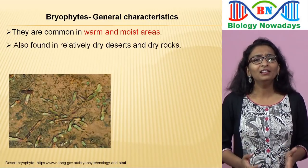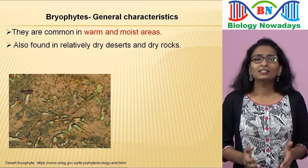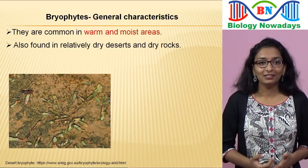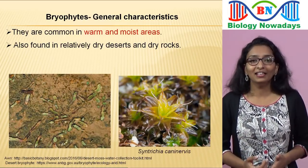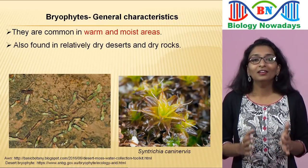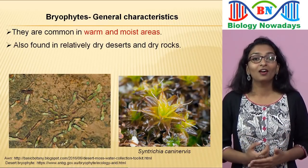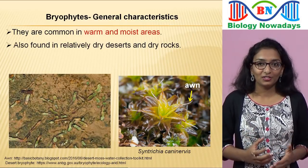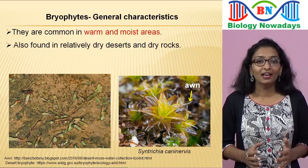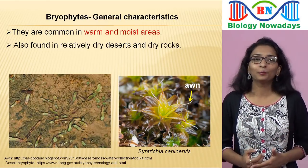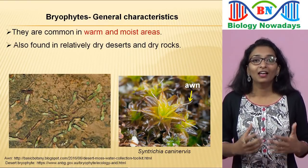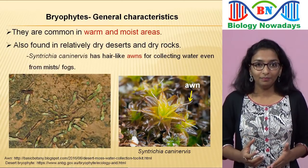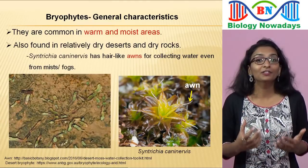As you know, finding water in the desert is not an easy task. So desert bryophytes like Syntrichia caninervis have developed small leaf hair points or awns. These tiny hair-like structures at the tip of each leaf have an amazing ability to collect water. The awns allow these plants to take in water from the occasional rain, but also from mist and even fog.